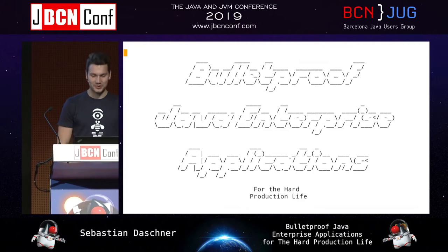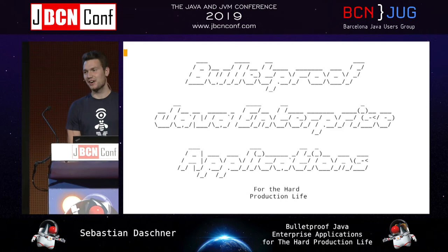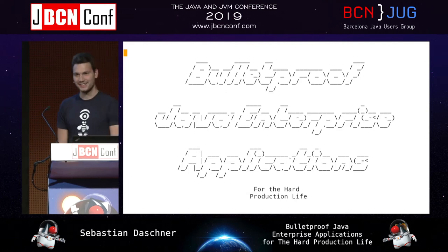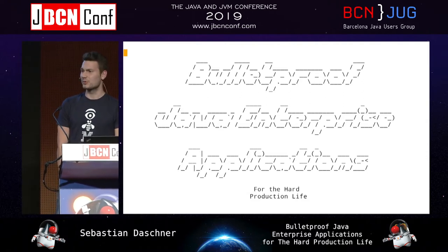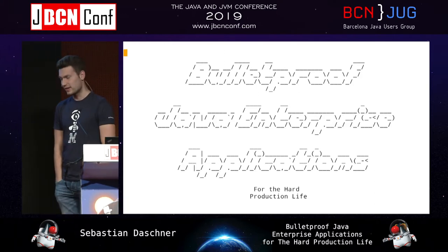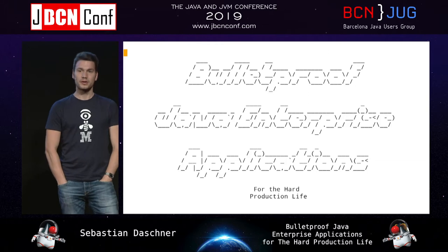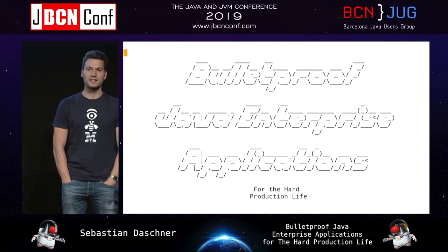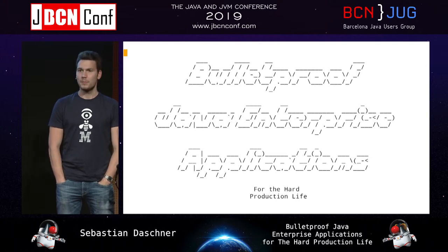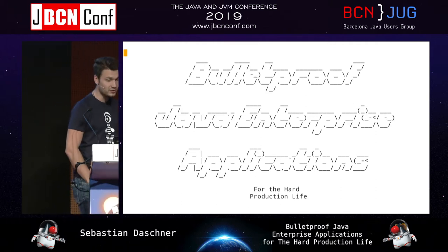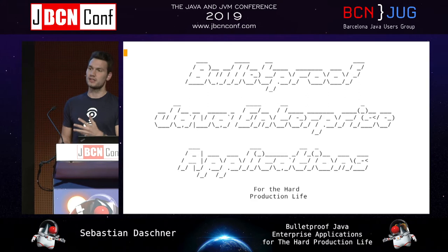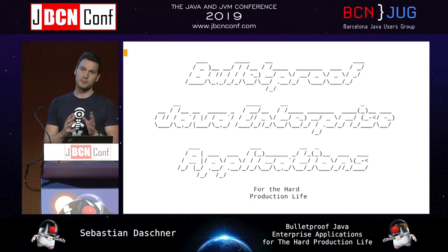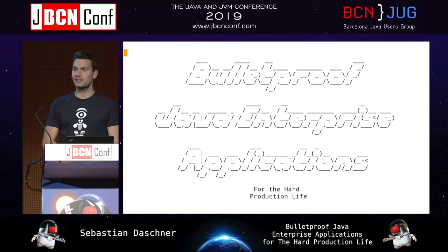Welcome to this session on bulletproof Java enterprise applications for the hard production life. This session covers how to make enterprise Java applications more resilient and apt for production. While developing enterprise applications using APIs is straightforward, running them in production is quite different — you have to care about implementation-specific details, especially a few resiliency patterns, particularly with Java EE, Jakarta EE, and MicroProfile.